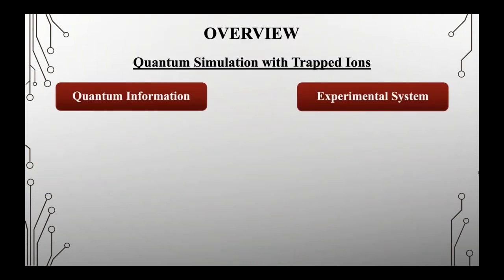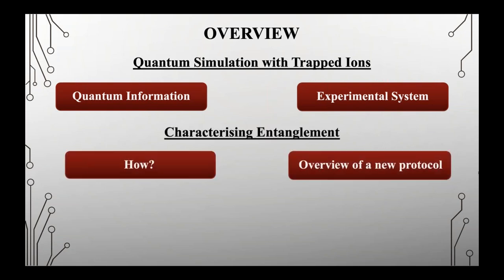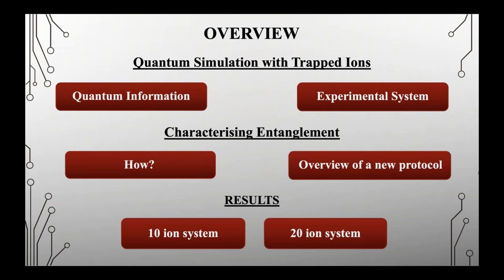Here's a brief overview of the talk. I'll go over the basics of quantum information and the experimental setup used for the quantum simulator. I'll then discuss entanglement — to get an advantage over classical analogues, we need to create a large amount of entanglement in the quantum system, and therefore we need to characterize how much entanglement is there. I'll then give an overview of a new protocol that uses a relation between entropy and entanglement to characterize it, and finally show results from 10 and 20 ion chains.